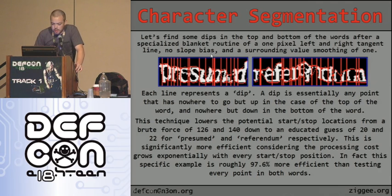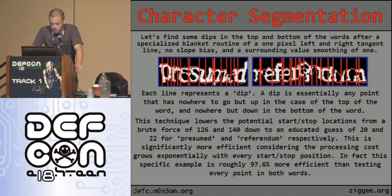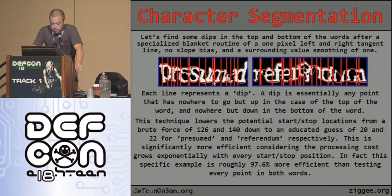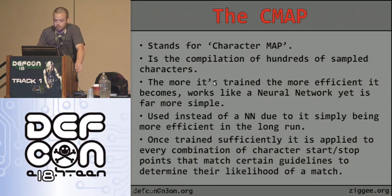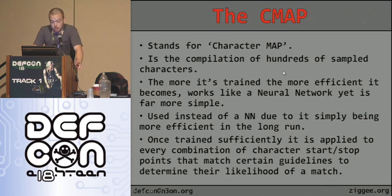Wherever the blanket falls deep into a crevice, that marks a character start or stop point. This technique lowers potential start/stop locations from a brute force of 126 by 140 down to an educated 20 by 22 — about 97.6% more efficient. The cmap, or character map, is a compilation of hundreds of sampled characters. The more it's trained, the more efficient it becomes. It works like a neural network but is far simpler. I use it instead of a neural network because I tried all common OCR neural network implementations and the cmap worked best for this CAPTCHA.